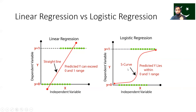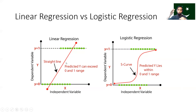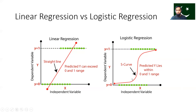You can use the logistic function, which we previously used with COVID-19 data. This function takes any output value, whether it is very large or very small, and maps it to a value between 0 and 1. Your output will always be between 0 and 1. It also produces an S-shaped curve, which is a better fit for this type of classification problem compared to a straight line.